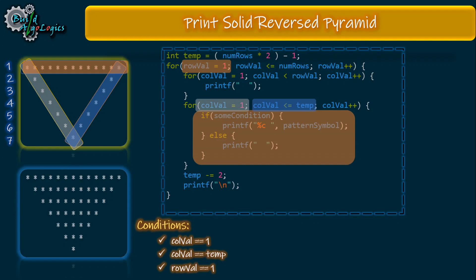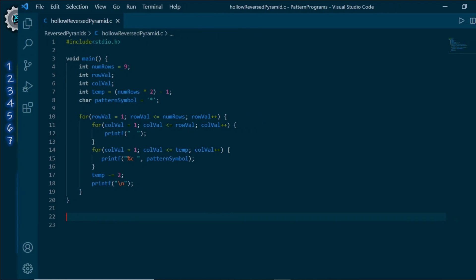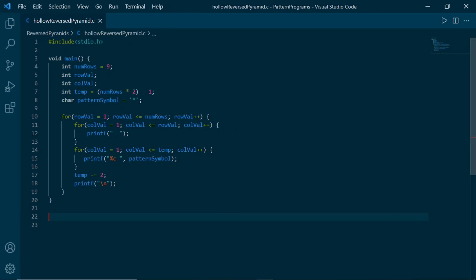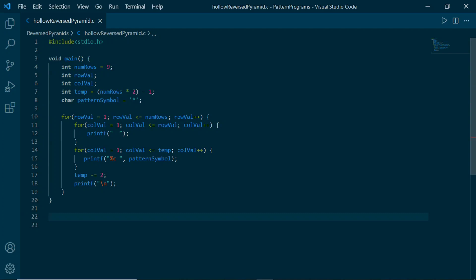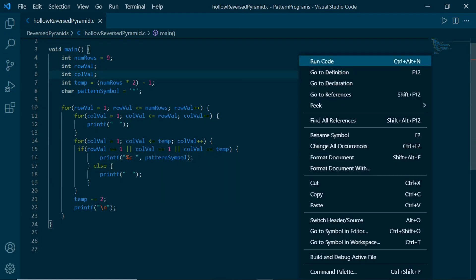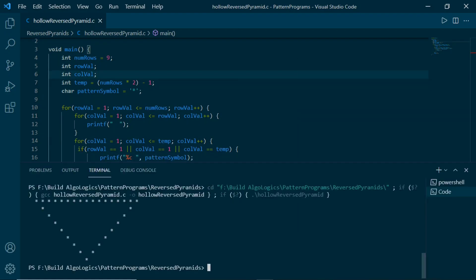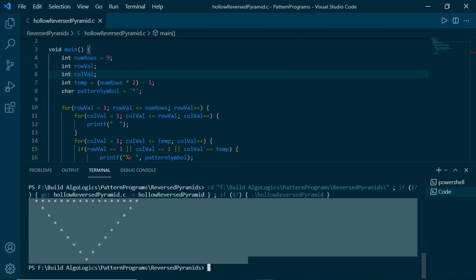This if-else block will contain these conditions. That's it, let's write our code for this pattern. Here's the code we written for printing solid pyramid. Now we'll replace this part with the conditions we derived earlier. Let's run it. Yeah, this is nothing but our hollow reversed pyramid. Now let's see our next pattern.